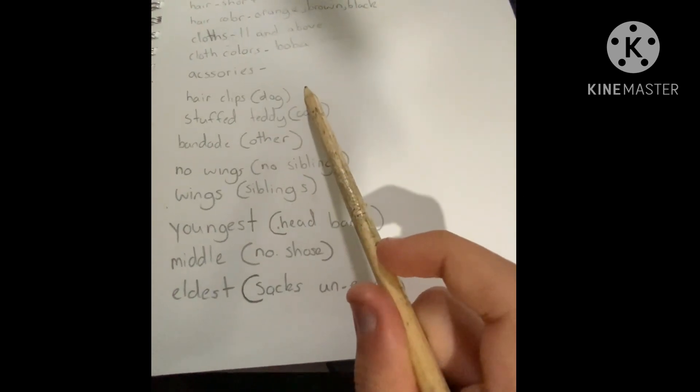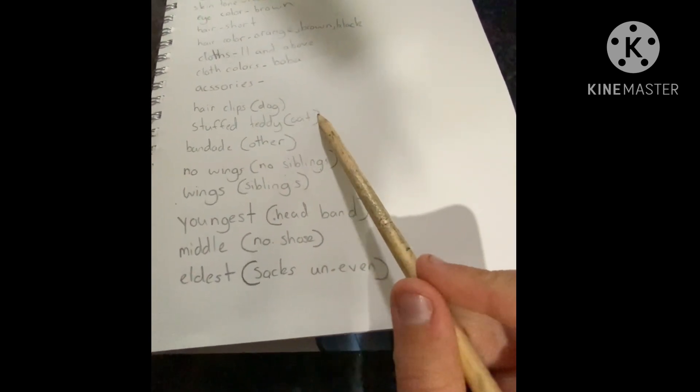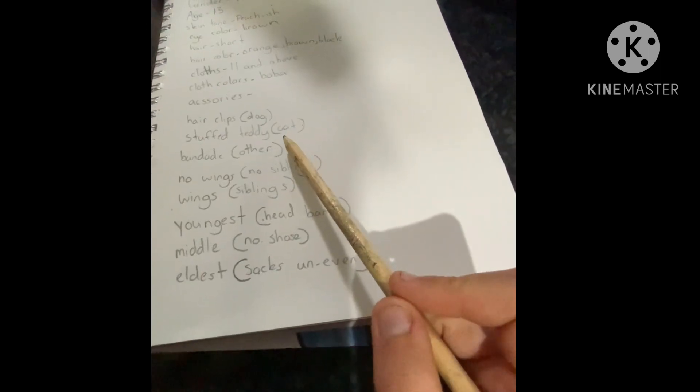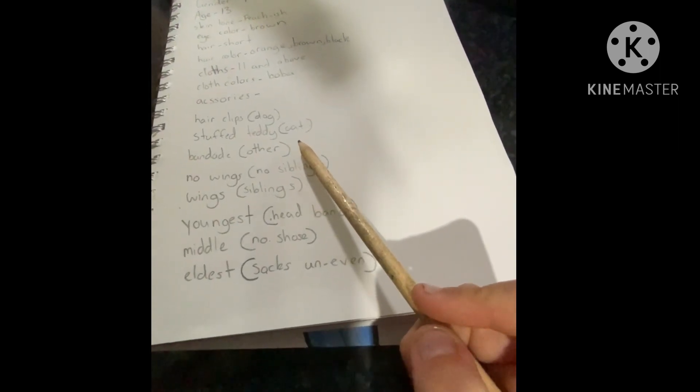Accessories: If you have a dog, you will have a hair accessory. If you have a cat, you will have a teddy. If you have other pets, you will have a band-aid.